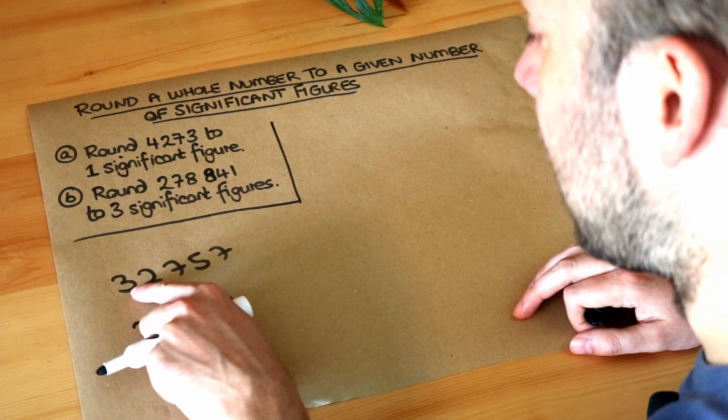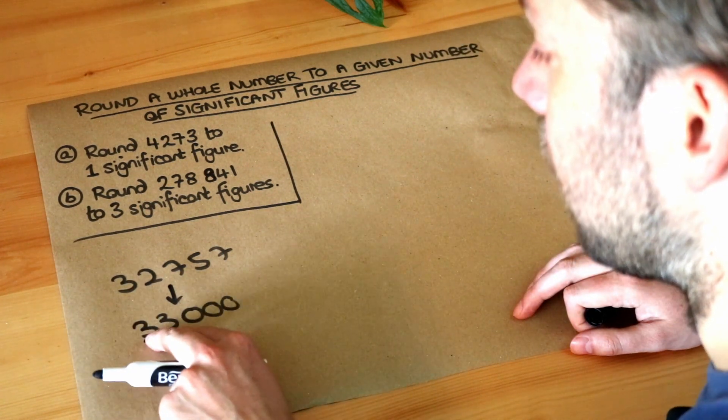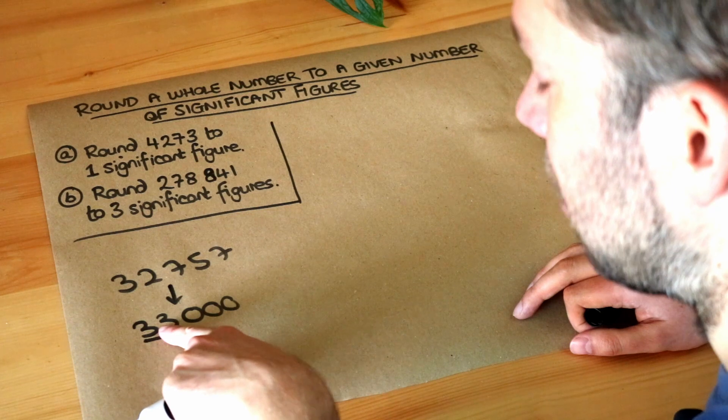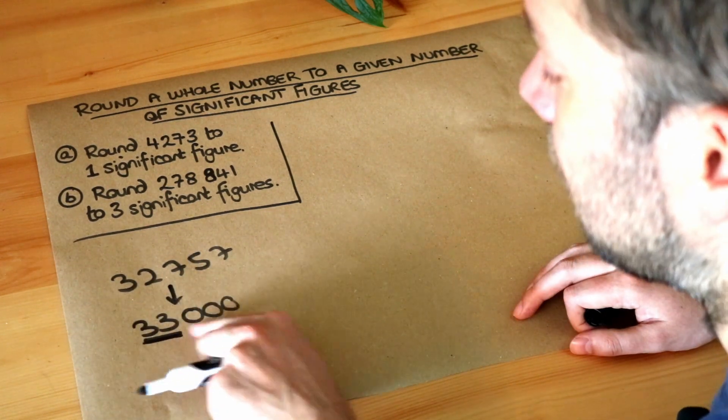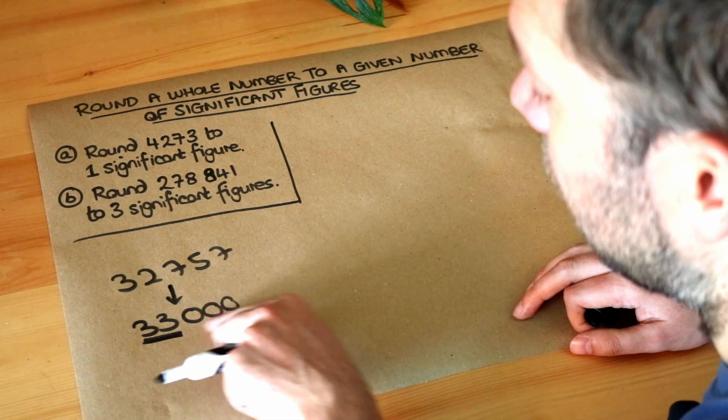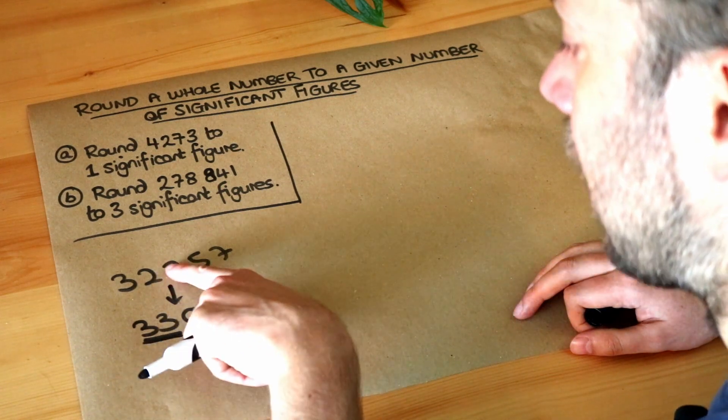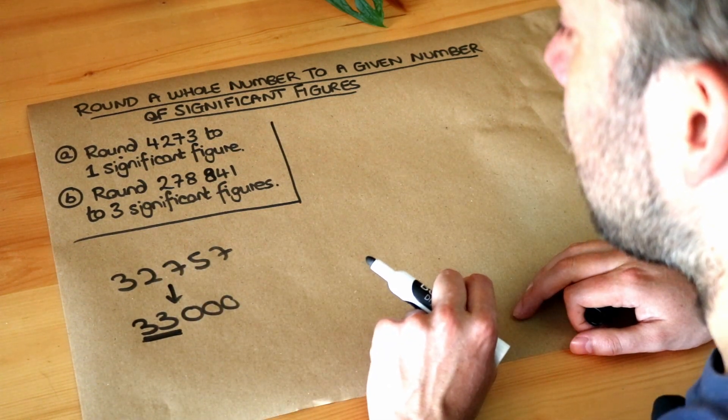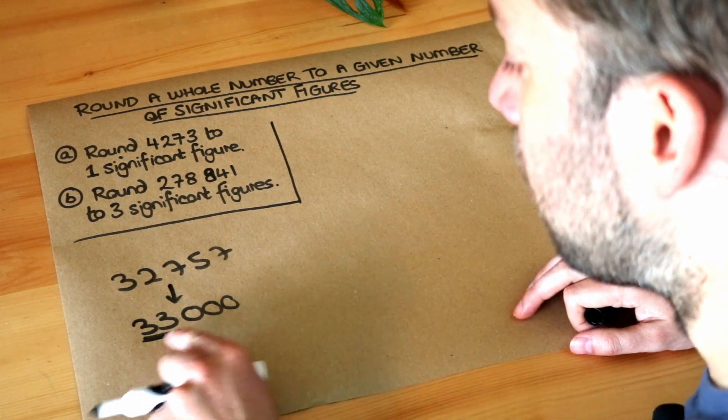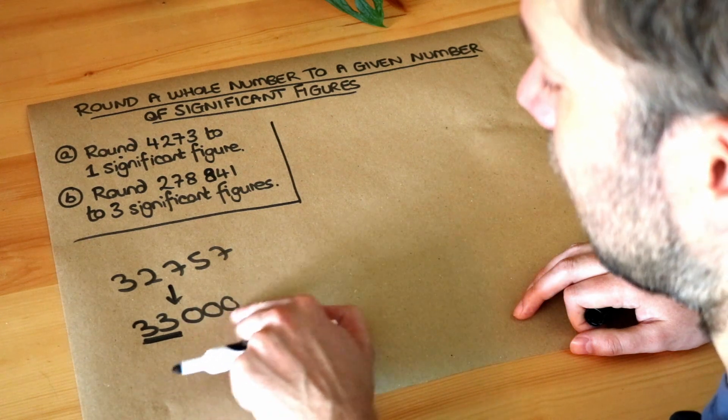Now what I've done in this particular case is I've just kept the first two digits of the number, and that digit changed from two to three, but I've only kept two of the digits and the rest of the digits have been wiped out, replacing them with zero. So in fact what I just did is I rounded this number to two significant figures. Significant figures is the number of digits we're keeping at the start of the number and replacing the rest with zeros.